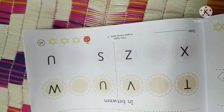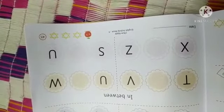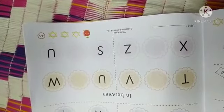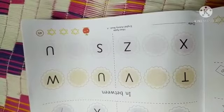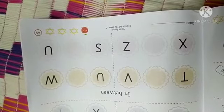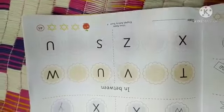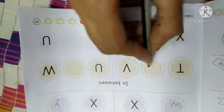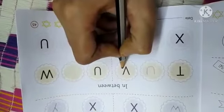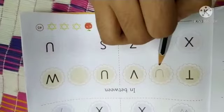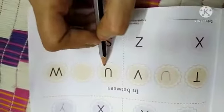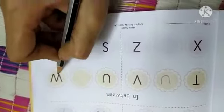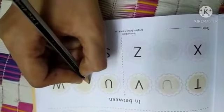A, B, C, D, E, F, G, H, I, J, K, L, M, N, O, P, Q, R, S, T, U, V. T, U, V. In between konsa alphabet aya hai? U. So children, U and W. What will come in between? V.